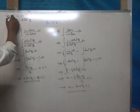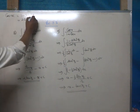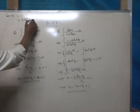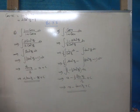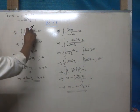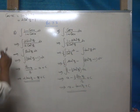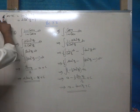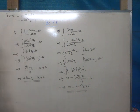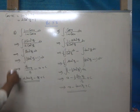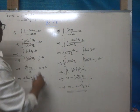So, cos x = 1 - 2sin²(x/2) or 2cos²(x/2) - 1. Therefore, 1 - cos x = 2sin²(x/2) and 1 + cos x = 2cos²(x/2). The 2s cancel, reducing the expression to tan²(x/2).